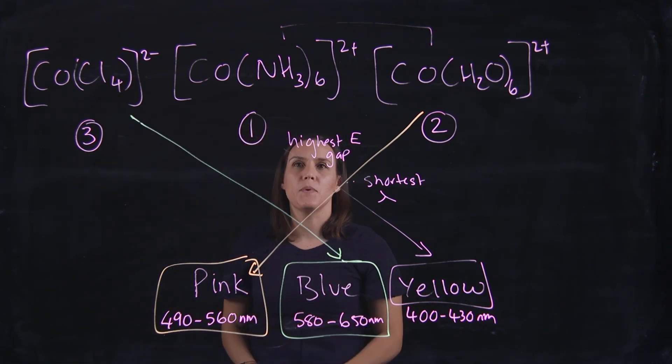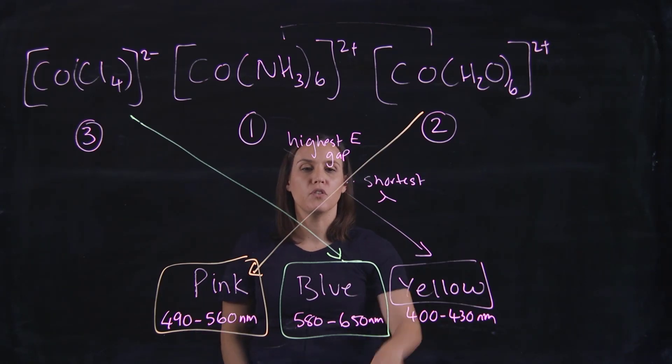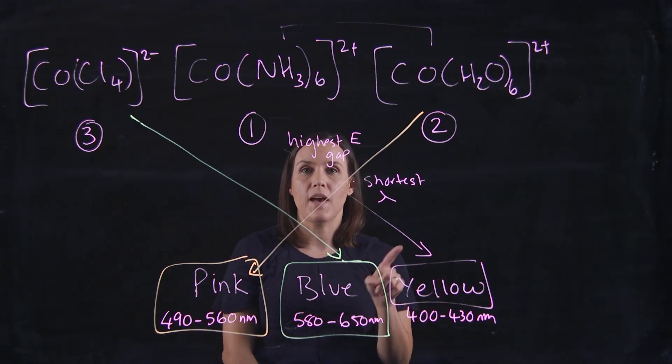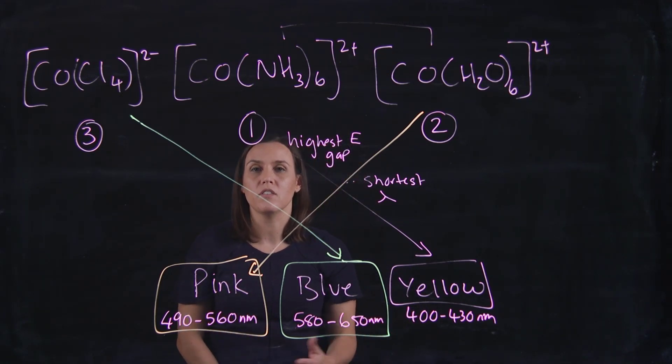Looking at the spectrochemical series, the one with the highest energy gap will have the shortest wavelength. Match them to the wavelengths that correspond to your three colors. Sometimes the question may give you extra information, and not all information is needed to solve the problem. This is an easy way to get to the correct answer. Thank you very much.